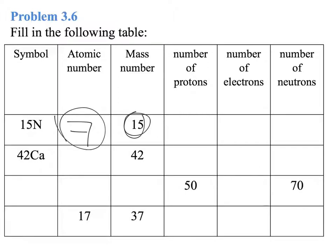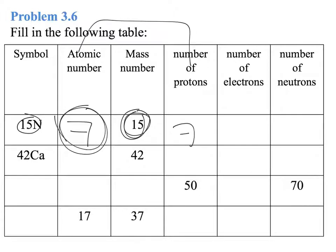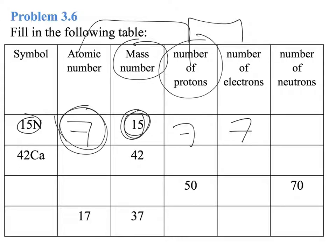For nitrogen-15, the atomic number is 7 and the mass number is 15. The number of protons is equal to the atomic number, so it's 7. The number of electrons equals the number of protons because it's neutral, so it's also 7. The number of neutrons is the mass number minus the number of protons, which in this case is 8.